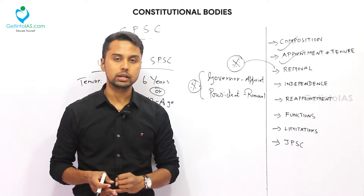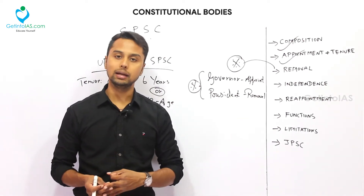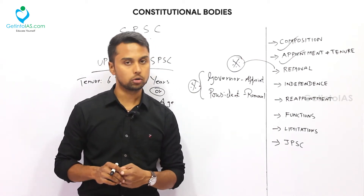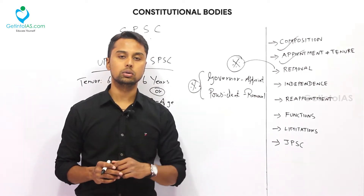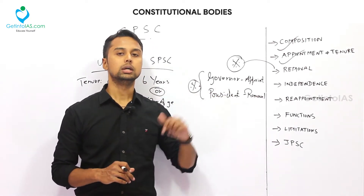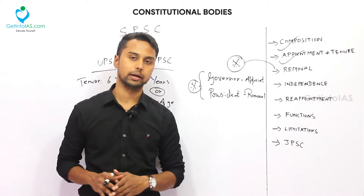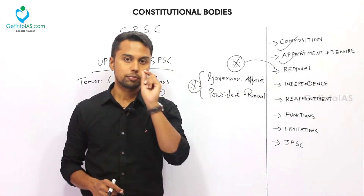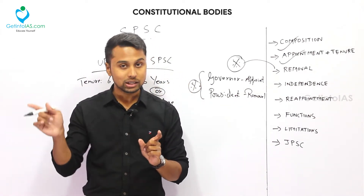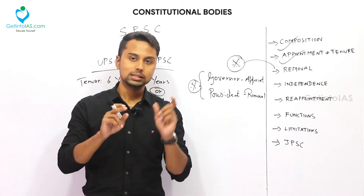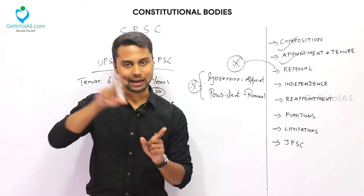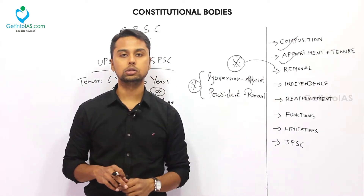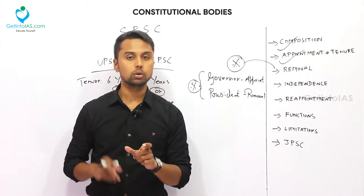The grounds for removal are: adjudged insolvent, unfit for the job, engaging in any paid employment, or proved misbehavior. For the ground of proved misbehavior, the president must refer the matter to the Supreme Court. Only after the Supreme Court gives its assent can the president remove the chairman or the member. Meanwhile, the president can only suspend. Another important point: do not get confused — since it is a state matter, you might think the president would refer to the High Court, but he refers directly to the Supreme Court only.